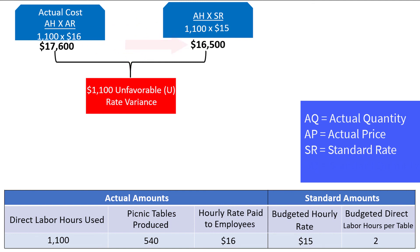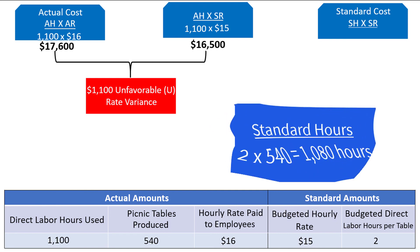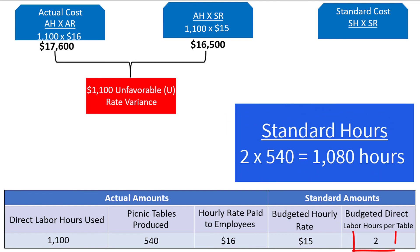Next we need to calculate the standard cost, which is equal to the standard hours (SH) times the standard rate (SR). The standard hours are the amount of hours that should have been used to create the number of picnic tables that were produced. The standard hours can be found by taking the standard of 2 hours per table multiplied by the 540 tables produced, which equals 1,080 hours. This can be multiplied by the $15 standard rate per hour to get $16,200.